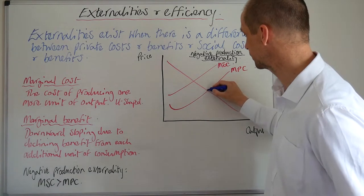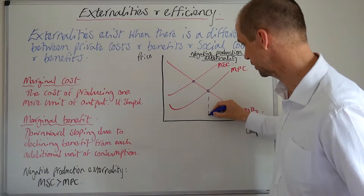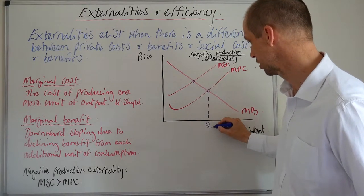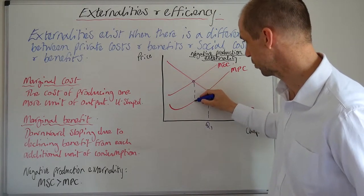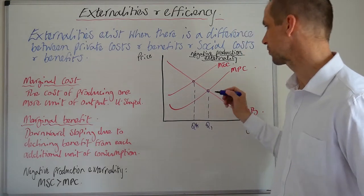So we've got two points of output. We can also identify, we've got this one, let's label that up first. I'm going to label that Q1. Meanwhile, we've got this point here. Let's label that Q star.